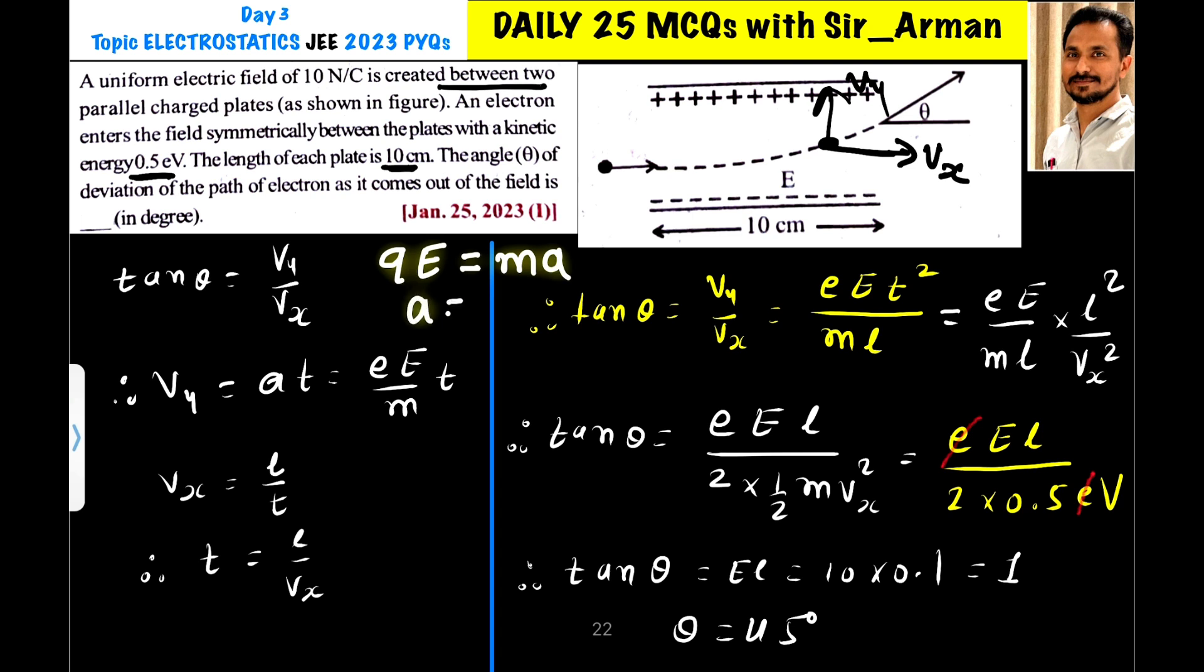So if you make a as a subject it is qE by m. The charge of electron is e. So it is eE by m into t.